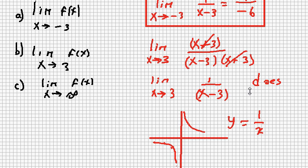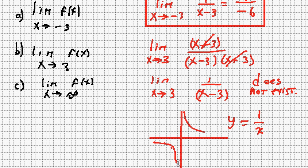The limit does not exist. I looked at the graph of 1 over x and observed that the graph of y equals 1 over x minus 3 is the same graph moved 3 units to the right. As x approaches 3 from the right, the graph shoots to infinity; as x approaches 3 from the left, it shoots to negative infinity. So the limit of 1 over x minus 3 as x approaches 3 does not exist. That is the solution to part b.